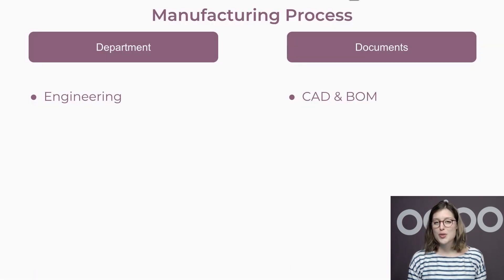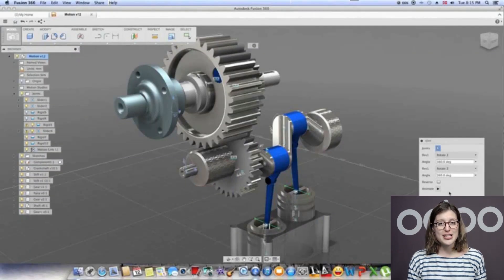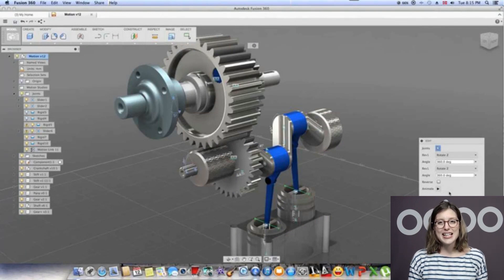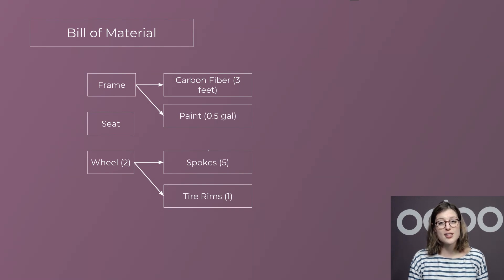So in a usual manufacturing process, the first step will be the engineers designing the final product. They usually work on a computer-aided design, also known as CAD, such as AutoCAD or Autodesk. Once they design the product in CAD, they will create a BOM, or bill of materials. Here's one for a bicycle. As you can see, it's quite simple, but it references every product and sub-product going into the bike. We'll see more about BOMs in a subsequent video.